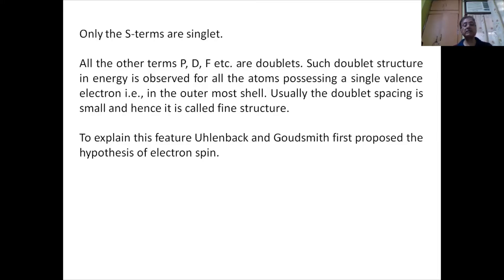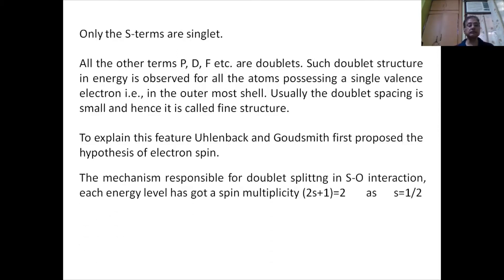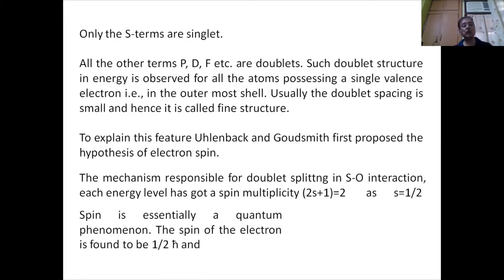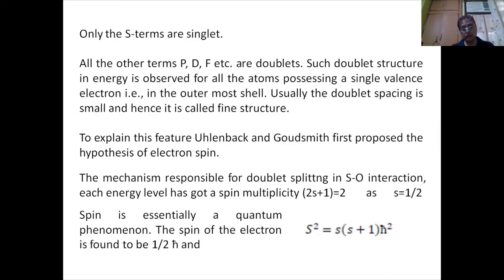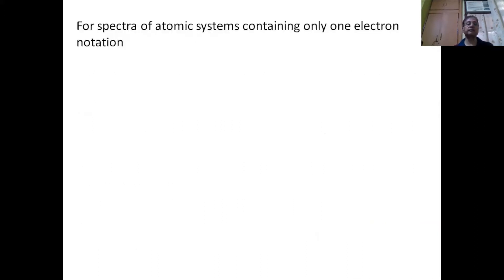To explain this feature, Uhlenbeck and Goudsmit first proposed the hypothesis of electron spin. The mechanism responsible for doublet splitting is spin-orbit interaction. Each energy level has a spin multiplicity of 2s+1, where s equals one-half. Spin is essentially a quantum phenomenon. The spin of the electron is found to be half h-cross, and s² equals s(s+1)h-cross².